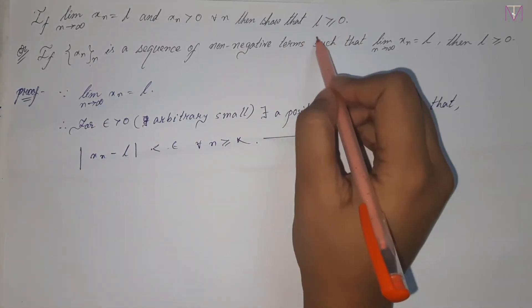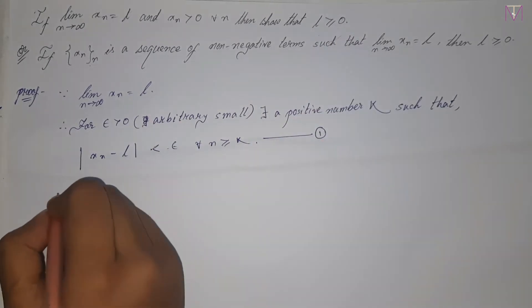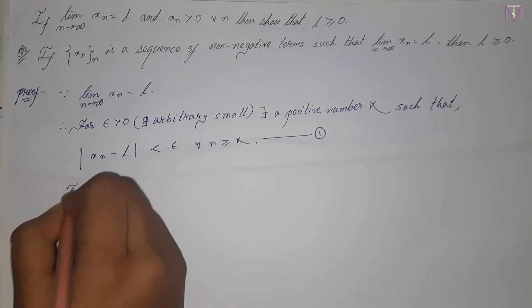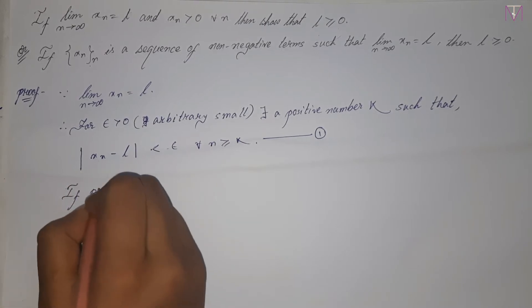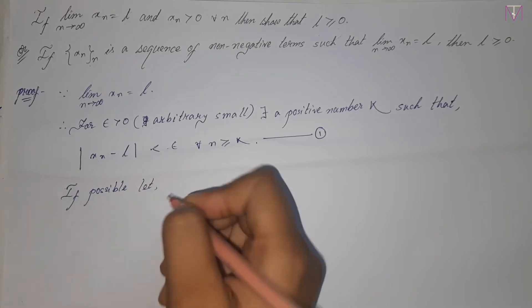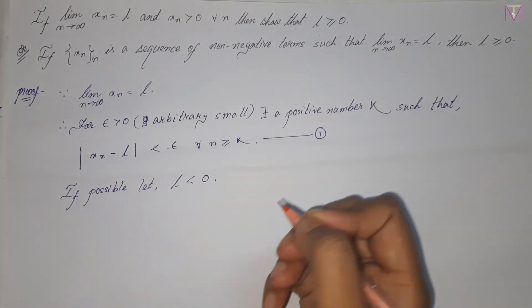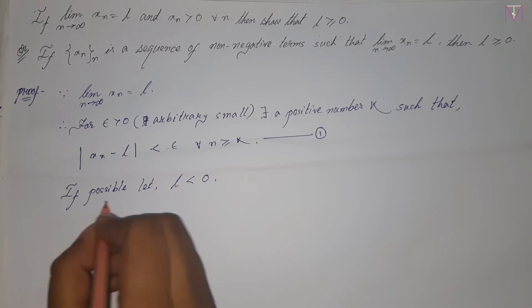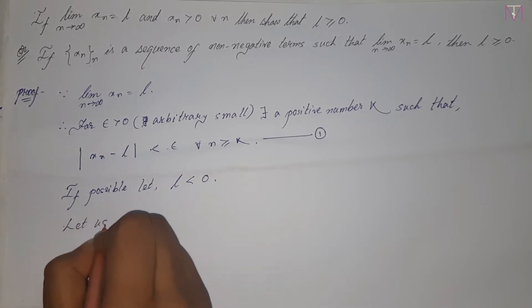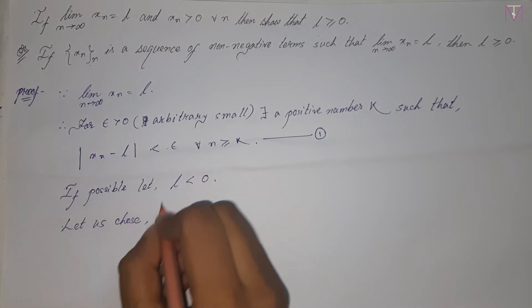We have to prove that l is greater than or equal to 0. We will use proof by contradiction. Let's assume, if possible, that l is less than 0.